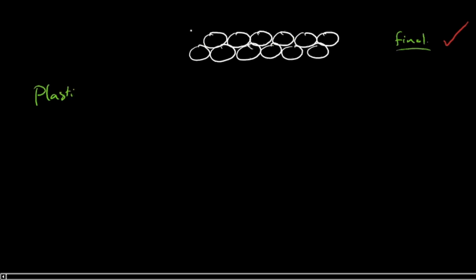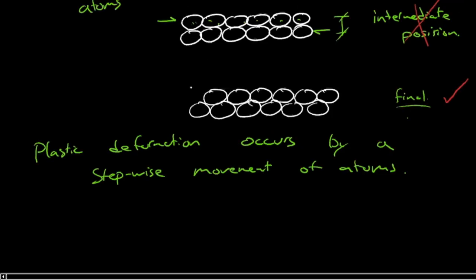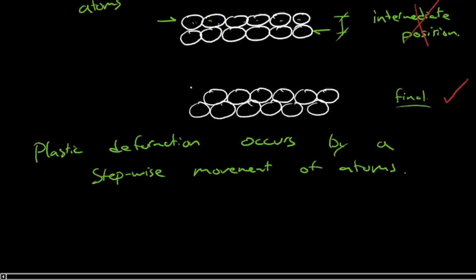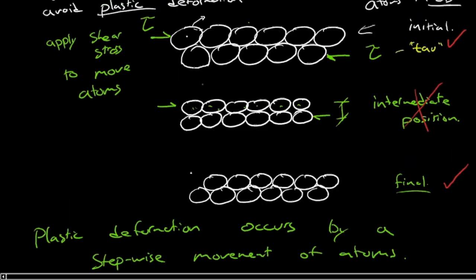In fact, plastic deformation occurs step-by-step, or step-wise, one at a time, movement of atoms. And so that's a correct statement, it's true. It's difficult to understand, though, because how can I get it? If we consider this as our model, how can we get these atoms to move, but only move one at a time?